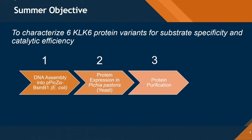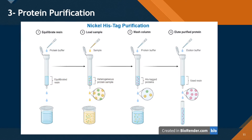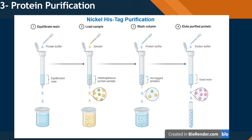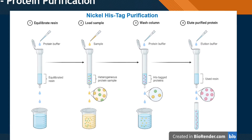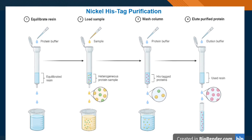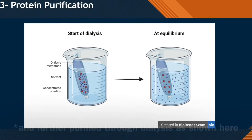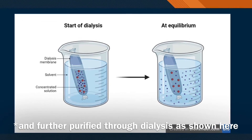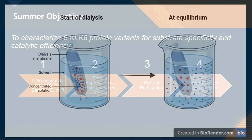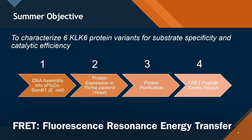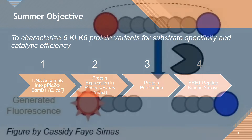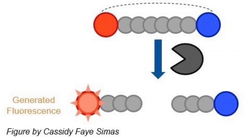Next comes purifying the protein using nickel-histidine purification, where the protein is captured and bound in a column that contains nickel, and the excess cell material can be washed out, and then the protein can be collected. Lastly, I needed to conduct enzyme kinetic assays using fluorescence resonance energy transfer peptides representing substrates. When the amino acid sequence is cleaved, it gives off a fluorescence that can be measured on a plate reader.